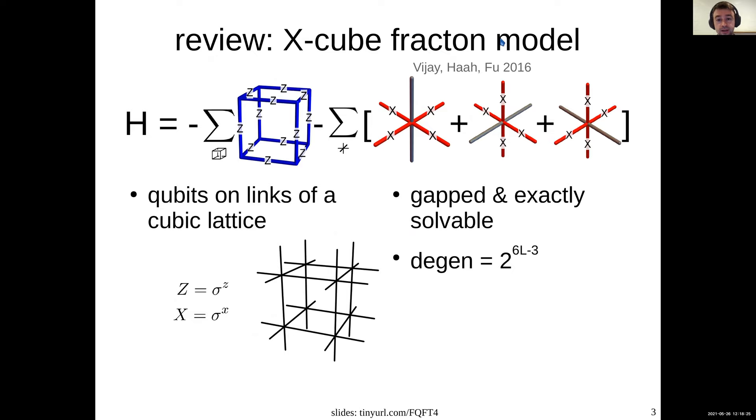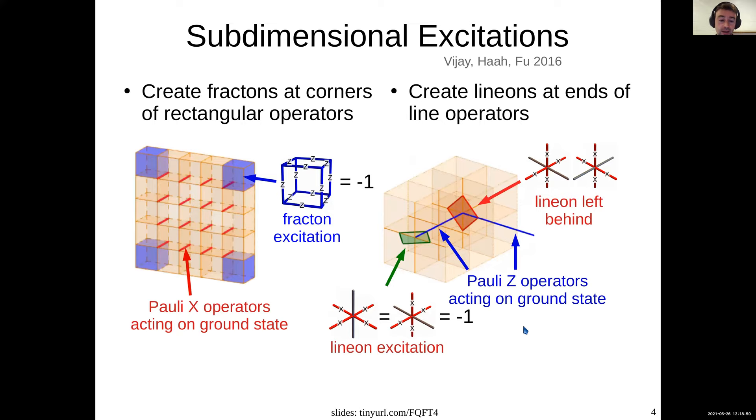The simplest type-1 fracton model that we'll realize and focus on is the X-cubed fracton model. Here the qubits are on links of a cubic lattice and you have these operators. This model is nice because it's gapped, exactly solvable, and it has a very large degeneracy on a torus that grows exponentially with system size. The interesting part about it is the excitations and the mobility constraints. If you act on the ground state with a rectangle of Pauli-X operators, so you have this membrane of Pauli-X operators, then you create four of these cube excitations at the four corners.